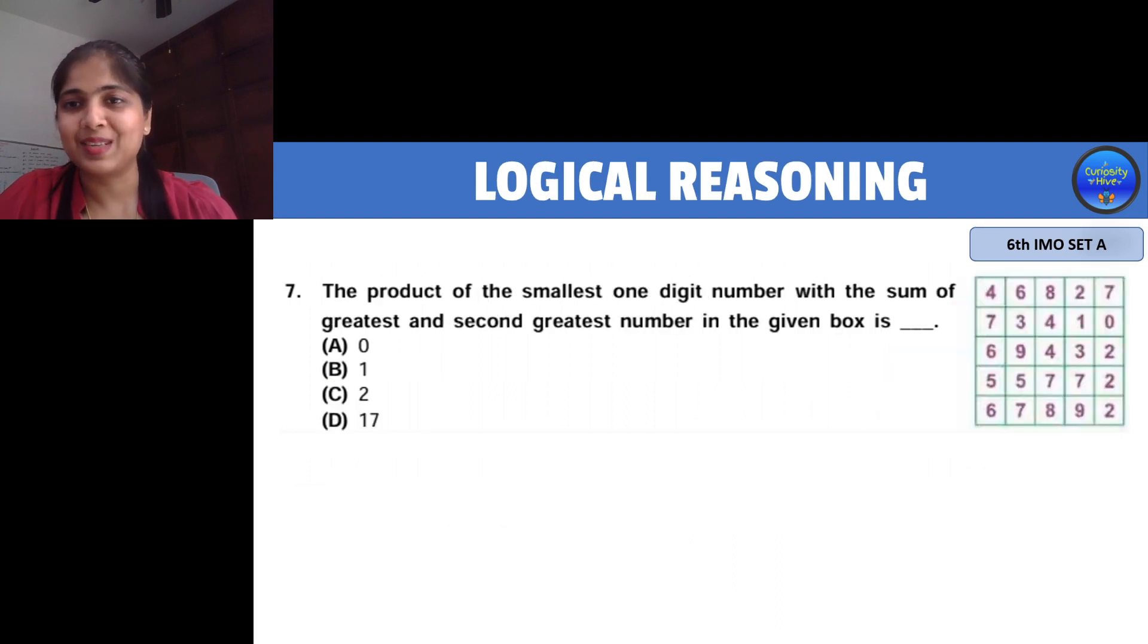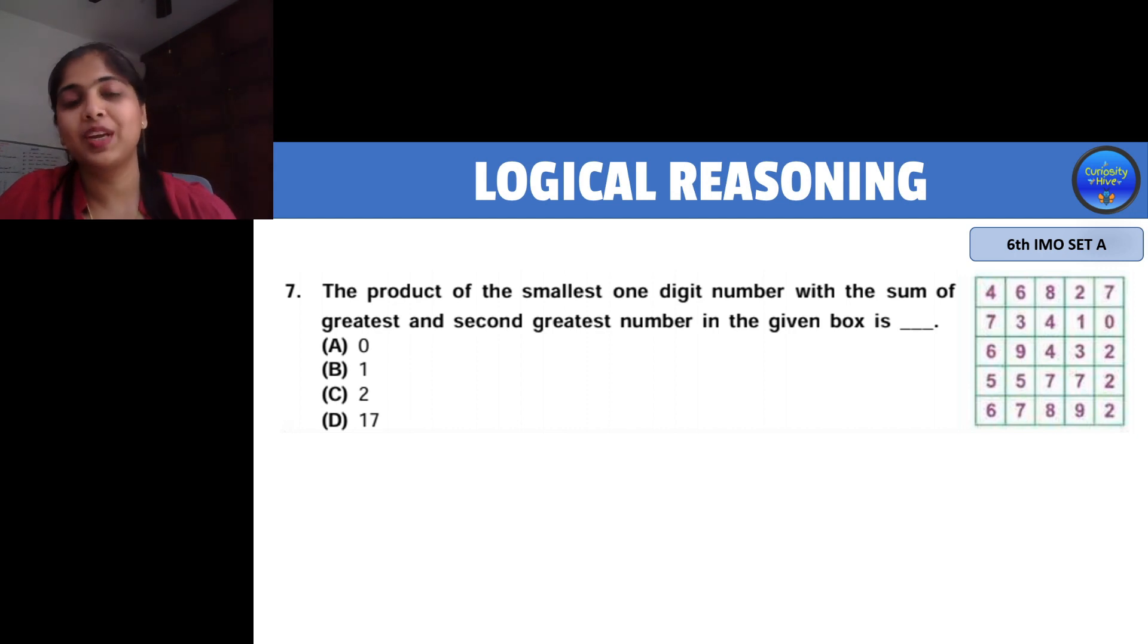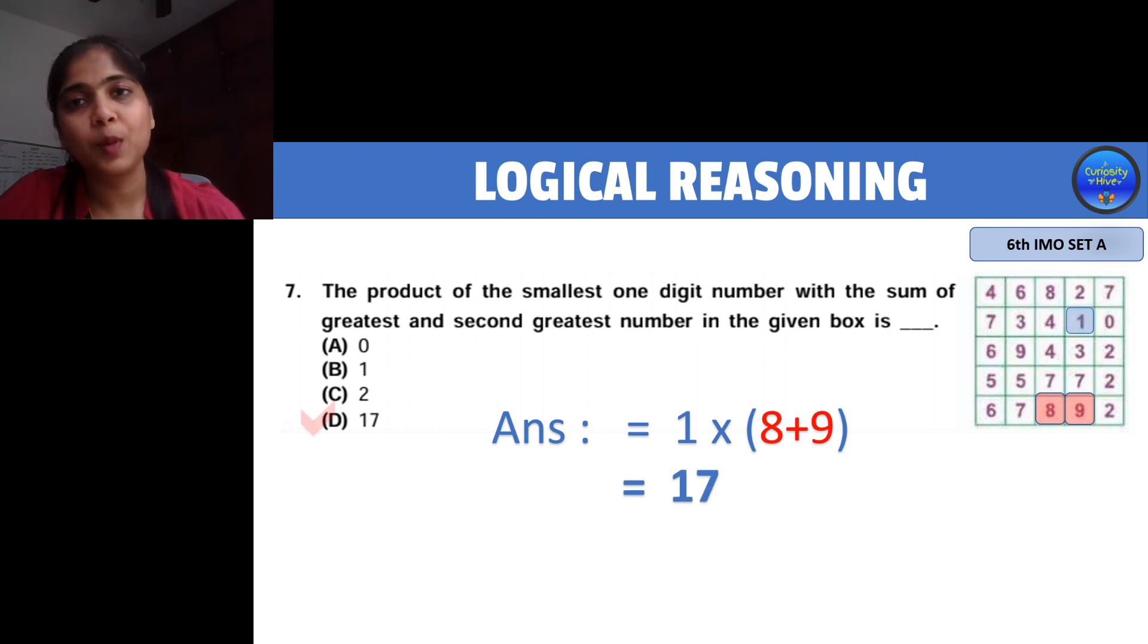Now let's go to the next one. I hope you've got it right. This was a trick question. We want to find the product of smallest one-digit number with the sum of greatest and second greatest number in the given grid. The greatest and second greatest numbers are 9 and 8. But the smallest one-digit number, if you chose zero, is incorrect. It is not zero, it is one. So your answer is 1 multiplied by the sum of 8 and 9, which is 17. Your right answer is option D, 17.